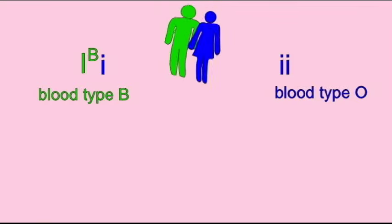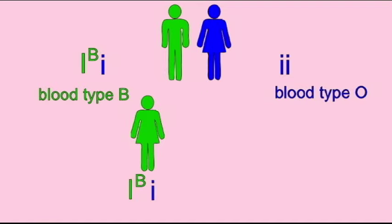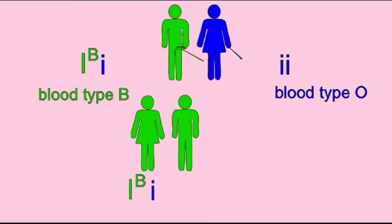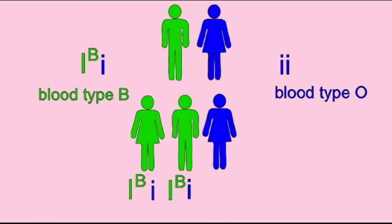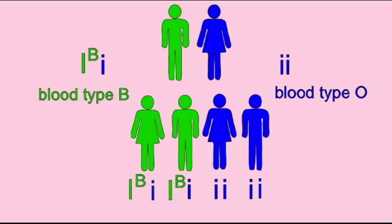If the parent with blood type B is heterozygous — if they have a B allele and an O allele — they will give half their children the B allele, and thus half their children will be blood type B. They will give the other half of their children the recessive O allele, and since these individuals will get a recessive O allele from each parent, they will be blood type O.